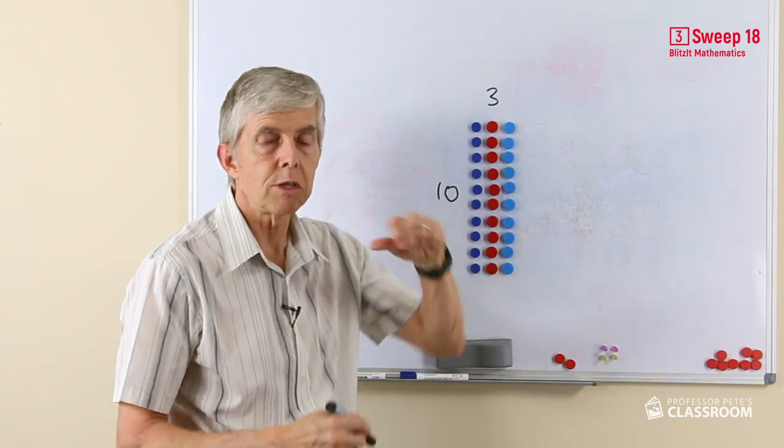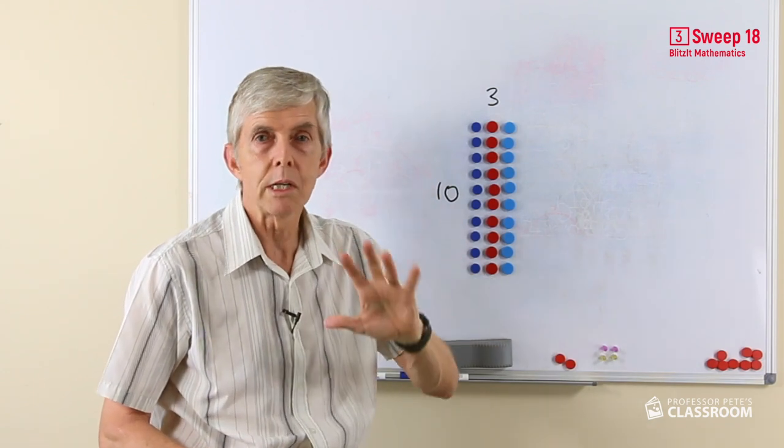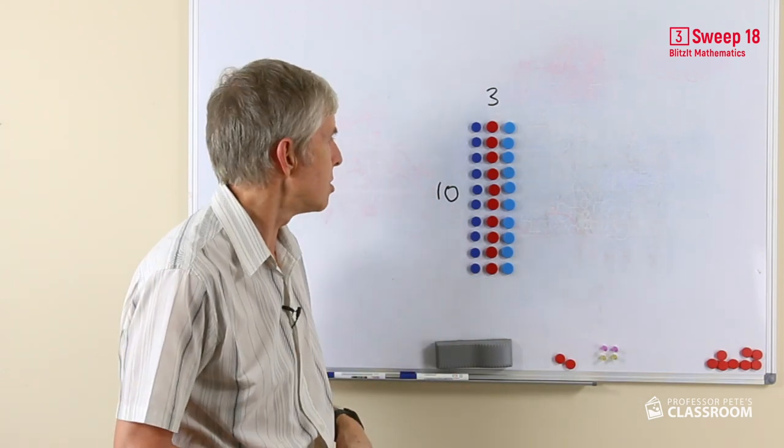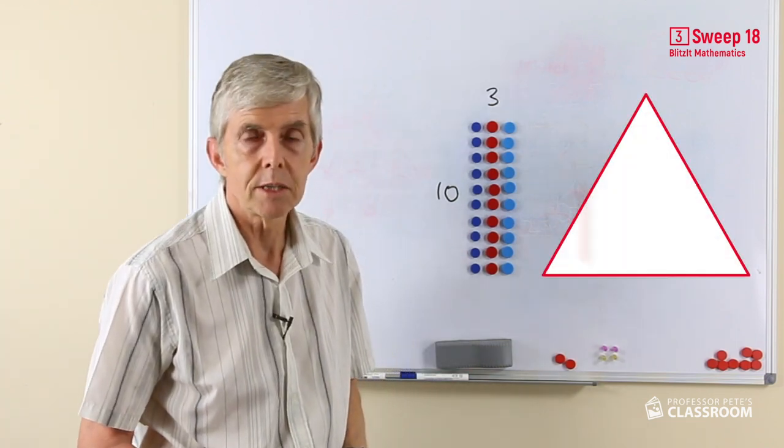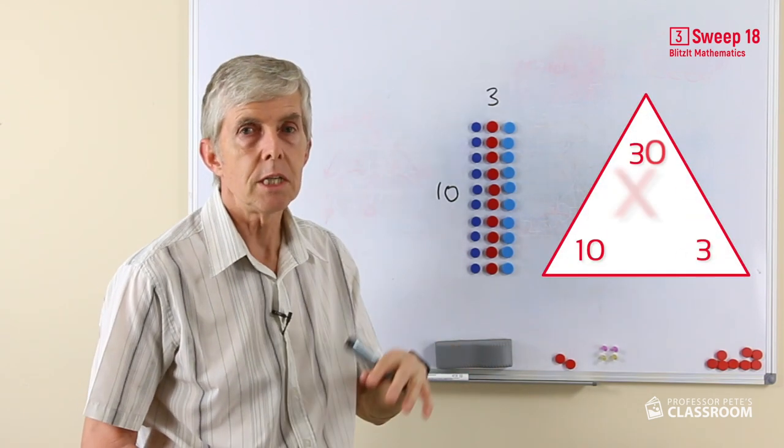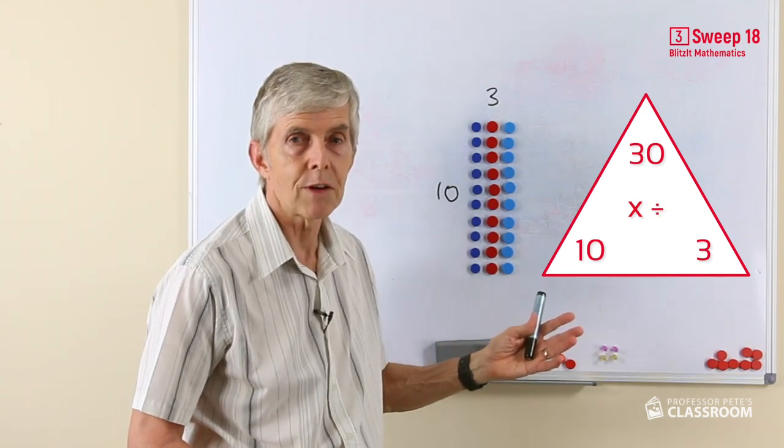Depending on the resources that you're using, you can spin this 90 degrees and show the turnaround facts are always the same, just as we would do similarly for addition. So we're saying 30 divided by three equals how many? 30 divided by 10 equals how many? We're seeing this as a number fact family.